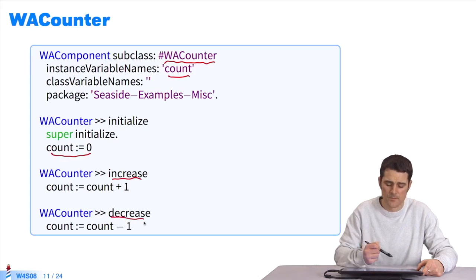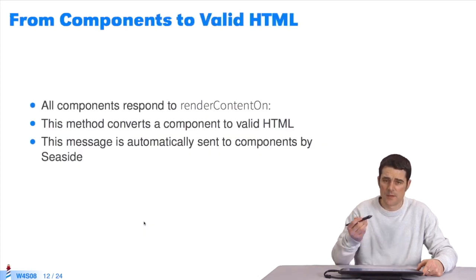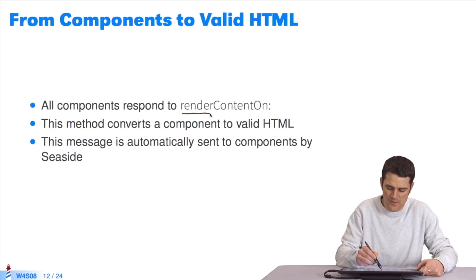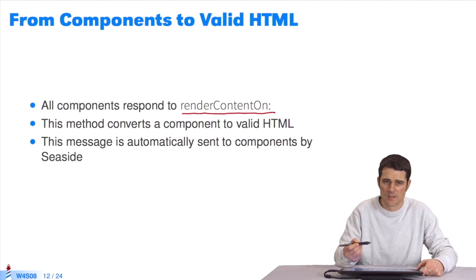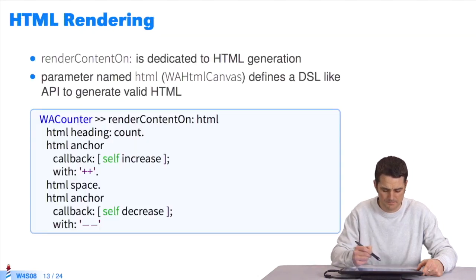The other method decreases it. Now we need the HTML part, so the counter is rendered in HTML. All we have to do is endow it with a method, renderContentOn, with a parameter. The parameter will help us generate the HTML code.